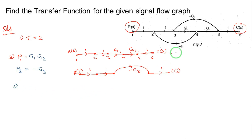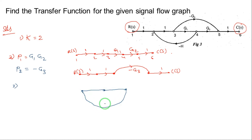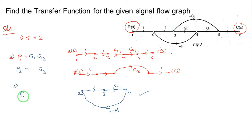Coming to the third point: identify the individual loops. There is one individual loop in the signal flow graph — a loop going from node 2 to node 3, node 3 to node 4, and node 4 back with feedback to node 2. The gain of this loop, L11, is calculated by multiplying all the gains around the loop: 1 × g1 × (−h) = −g1h. This is the overall gain of this individual loop.